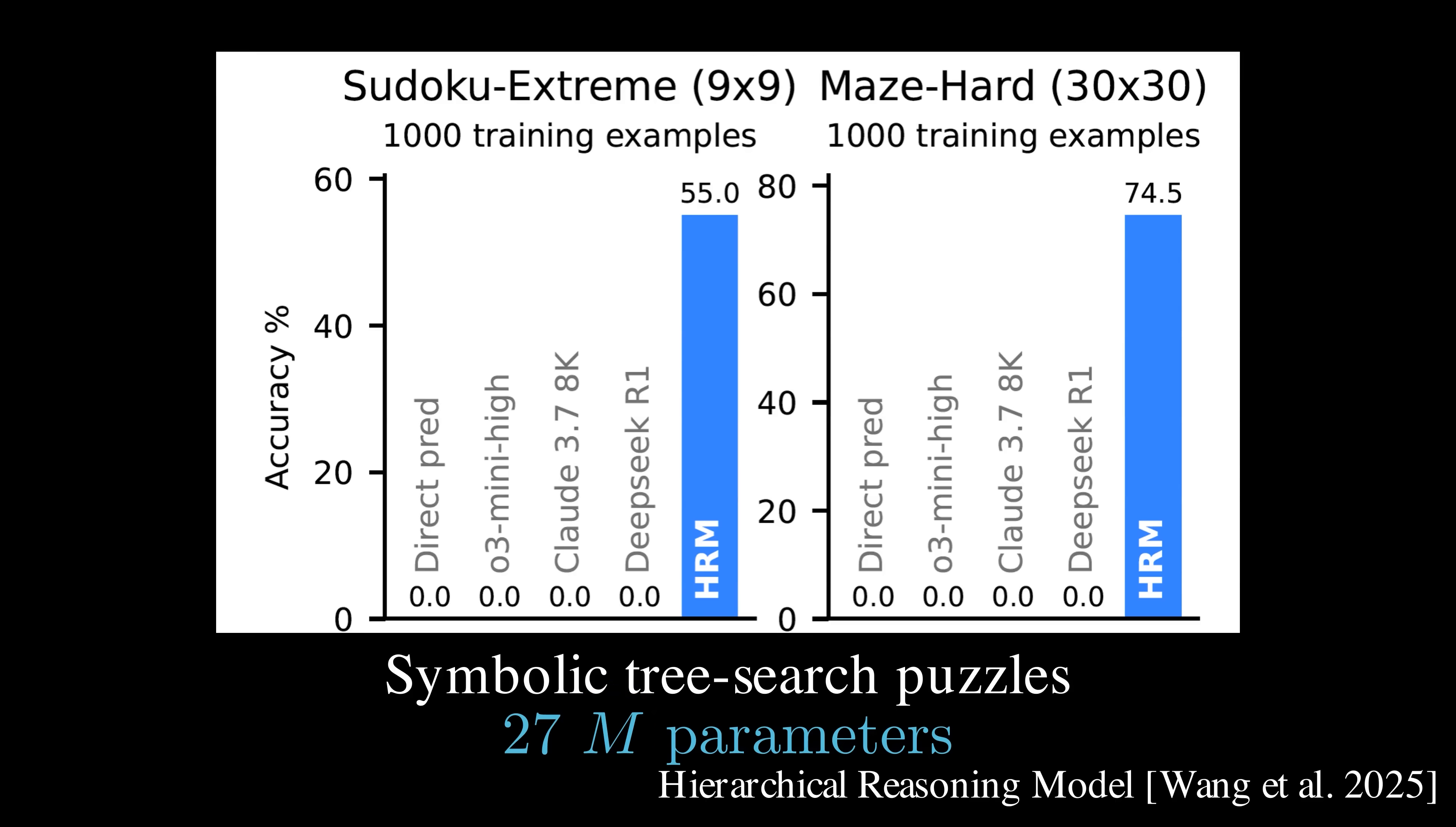Despite its small size, this model is able to tackle complex reasoning tasks after training on just 1,000 examples. But how does it work?